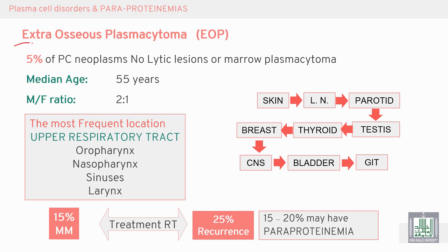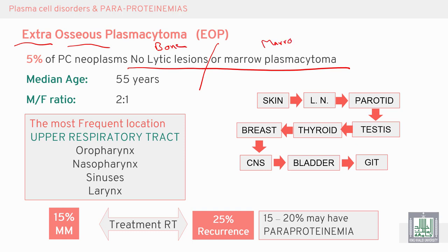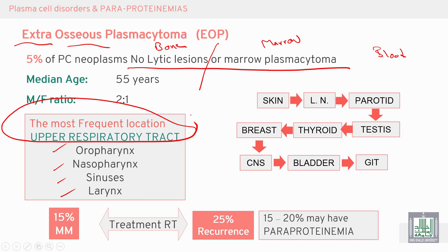Extraosseous plasmacytoma occurs outside the bone and represents 5% of plasmacytomas. There are no lytic lesions, no marrow involvement, and no plasma cells in the blood. Median age is 55 years with a 2:1 male predominance. The most frequent sites are the oropharynx, nasopharynx, sinuses, and larynx — essentially the upper respiratory tract. Treatment is radiotherapy. 15% of cases may convert to multiple myeloma, 25% have recurrence, and 20% may have paraproteinemia.